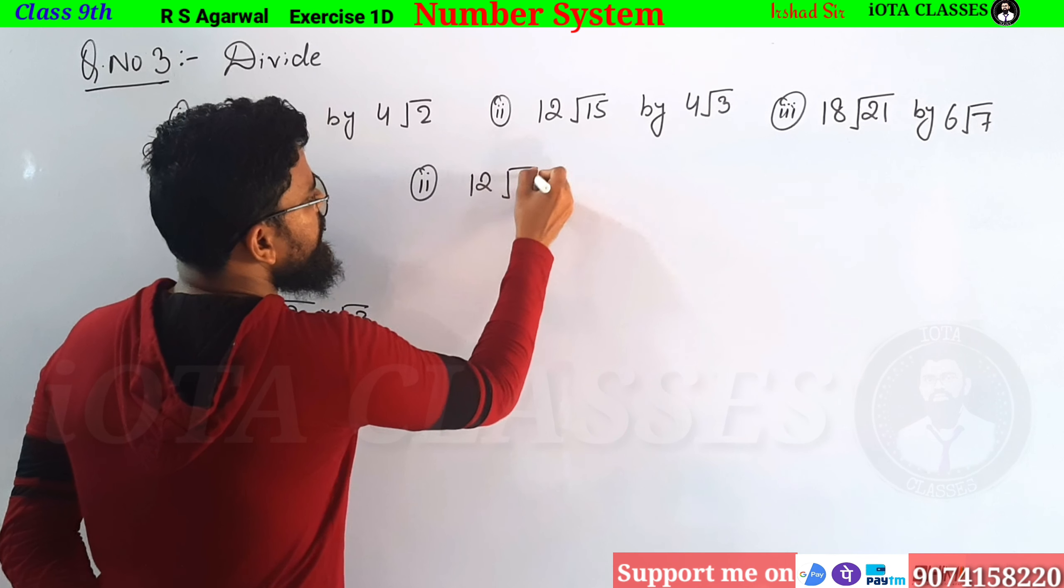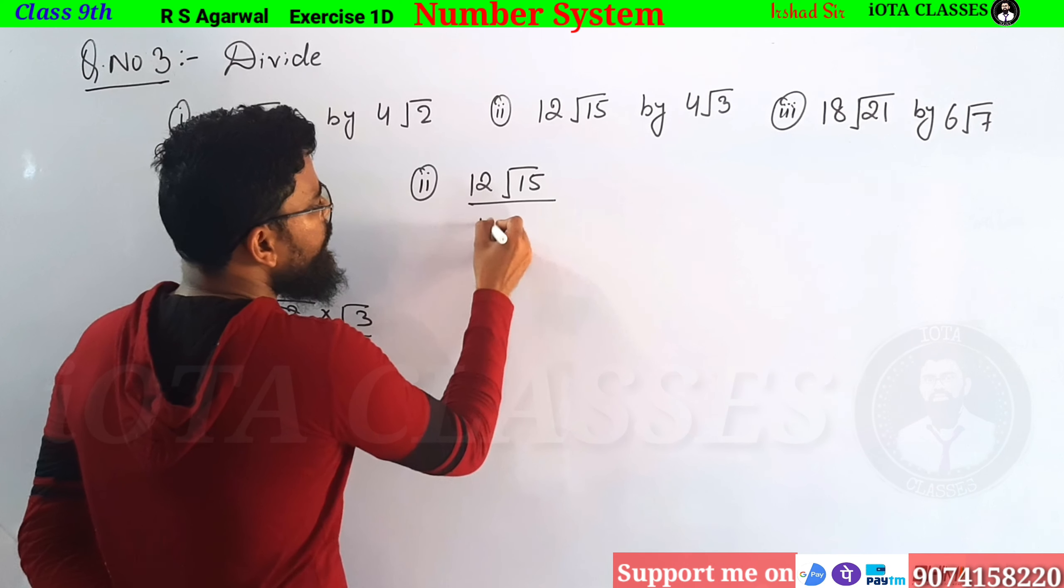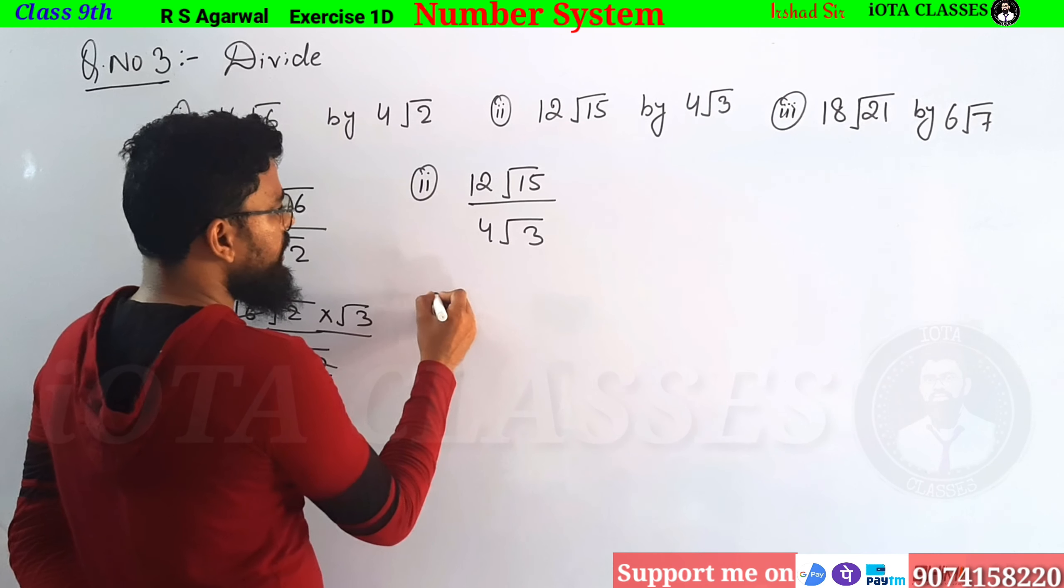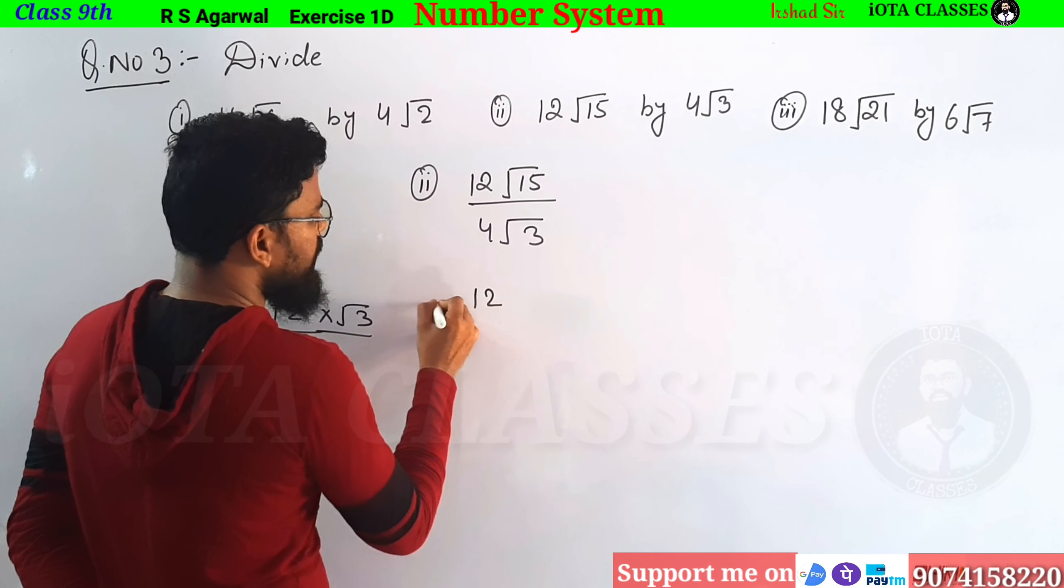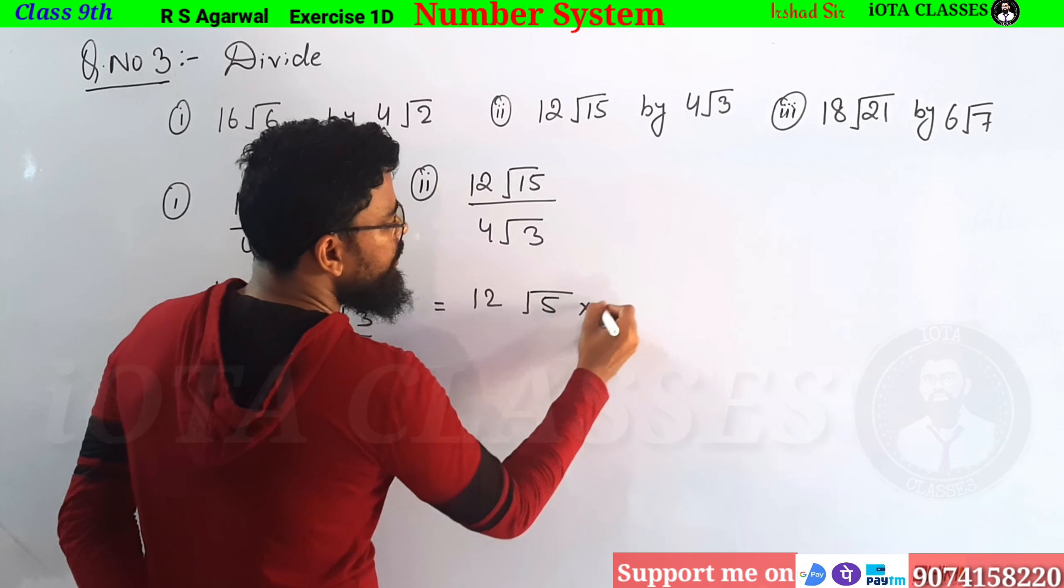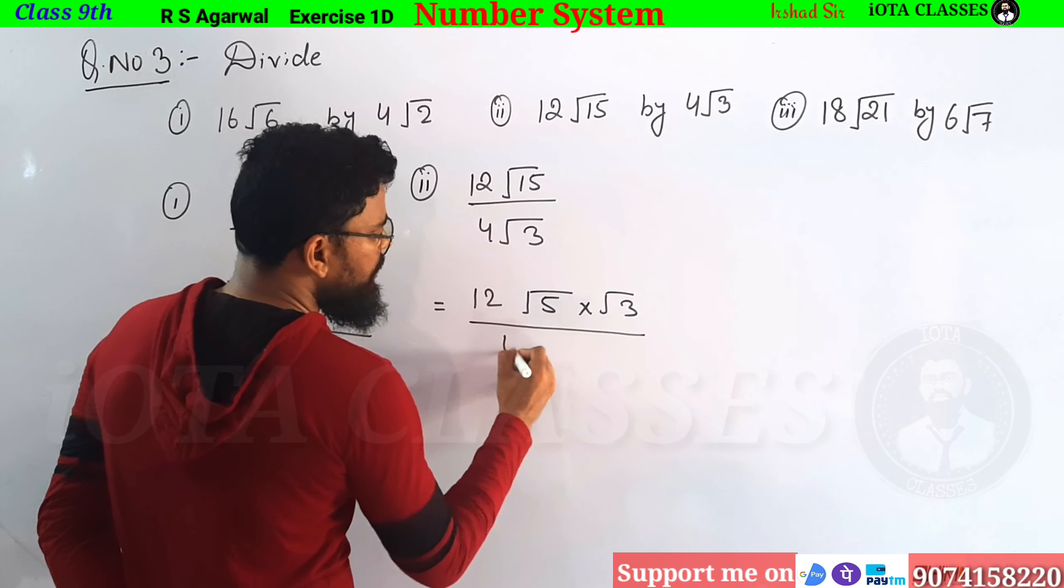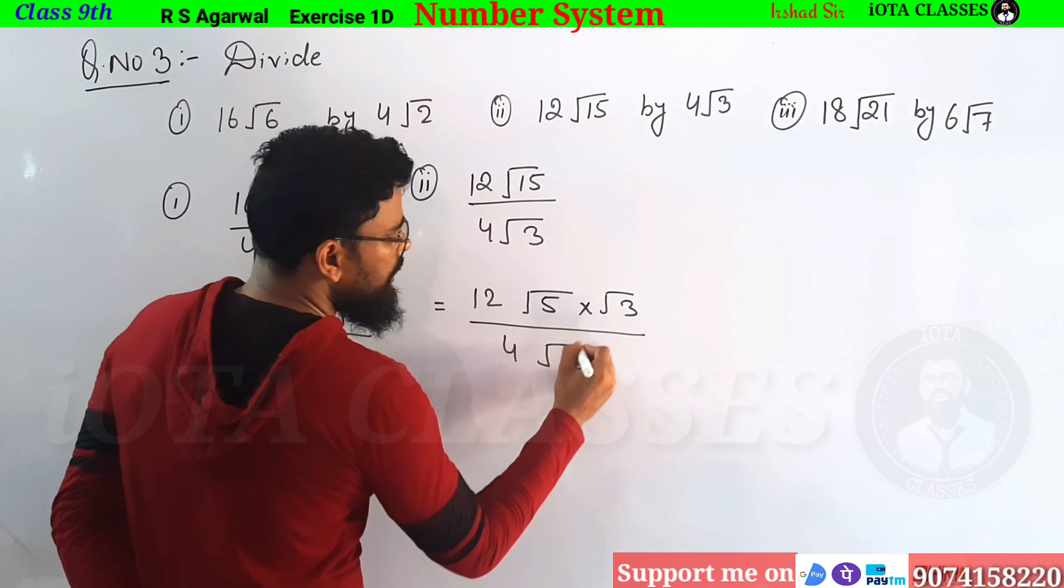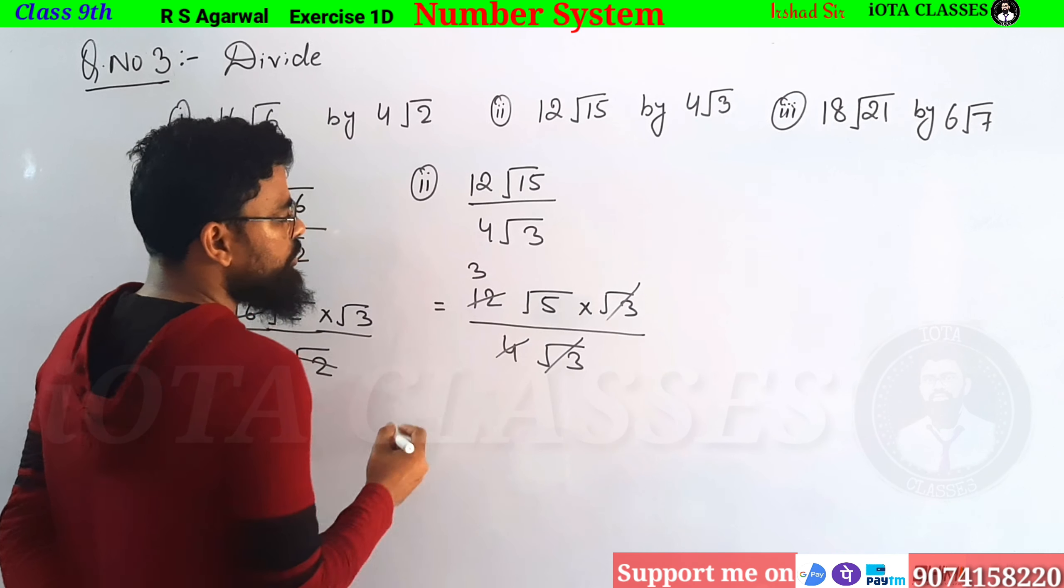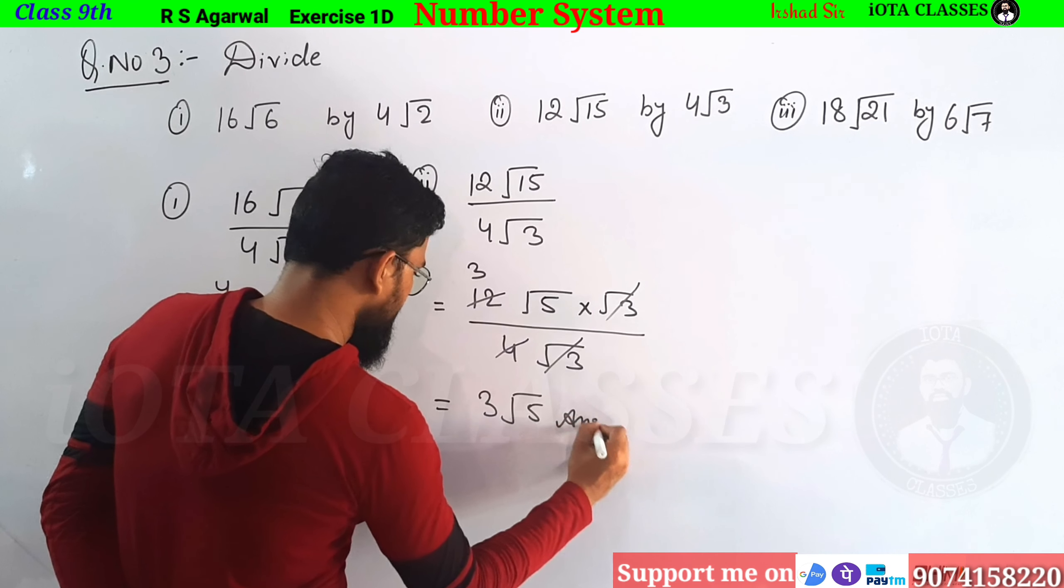We have 12 root 15 by 4 root 3. If we divide, we can write root 15 as root 3 times root 5. Root 3 cancels with root 3, and 12 divided by 4 is 3. So the answer is 3 root 5. This is our answer.